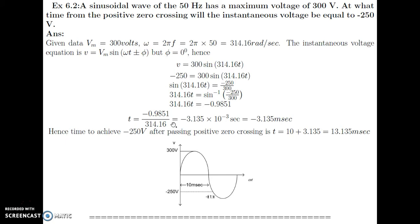So time T equals minus 0.9851 divided by 314.16, giving minus 3.135 milliseconds. But this negative value indicates time before zero — it is on the negative time side, not after positive zero crossing. Since frequency is 50 Hz, one cycle is 20 milliseconds and half cycle is 10 milliseconds. After the positive half cycle, the time to reach minus 250 Volts is 10 milliseconds plus 3.135 milliseconds, which equals 13.135 milliseconds.